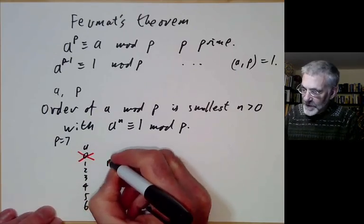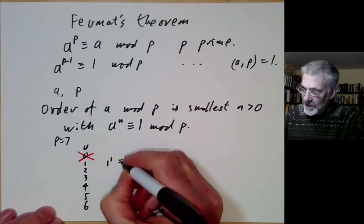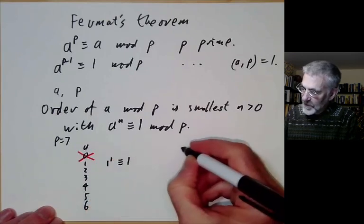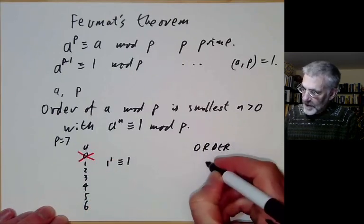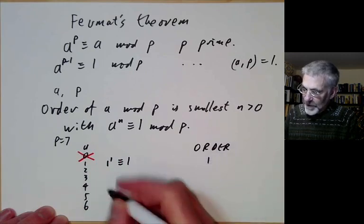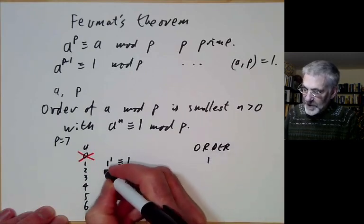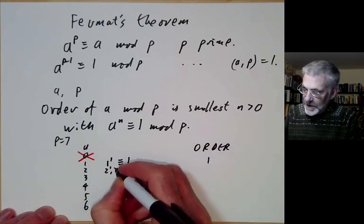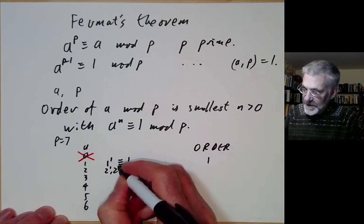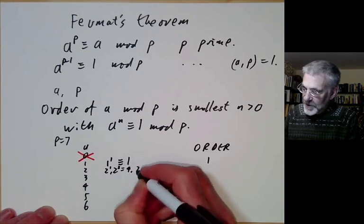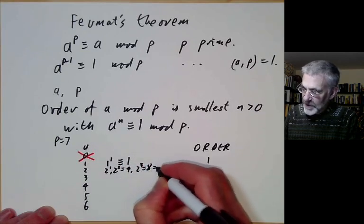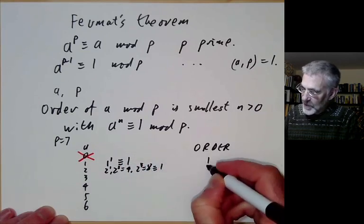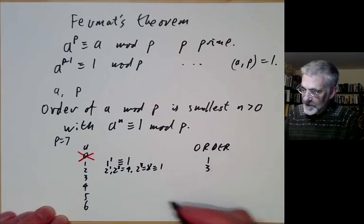1 to the power of 1 is congruent to 1, so the order of 1 is 1. If we take 2, we have 2 to the 1, 2 squared is 4, and 2 cubed is 8 which is congruent to 1. So the order of 2 is 3.